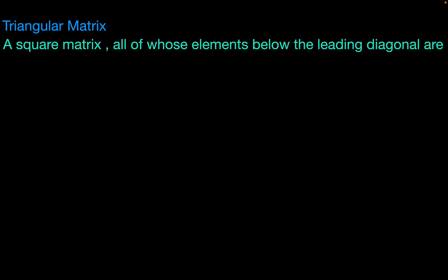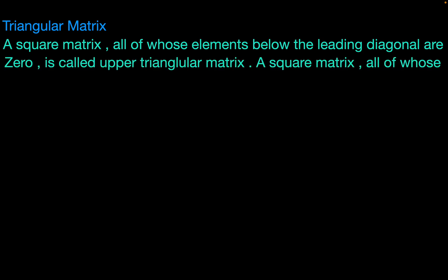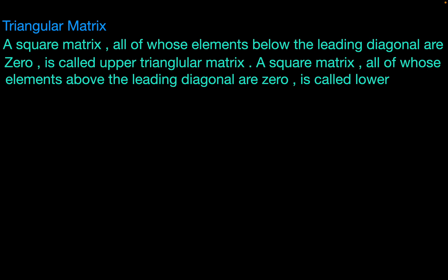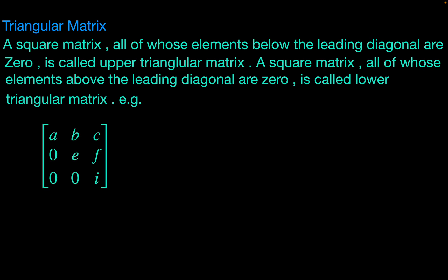A square matrix all of whose elements below the leading diagonal are 0 is called an upper triangular matrix. A square matrix all of whose elements above the leading diagonal are 0 is called a lower triangular matrix.